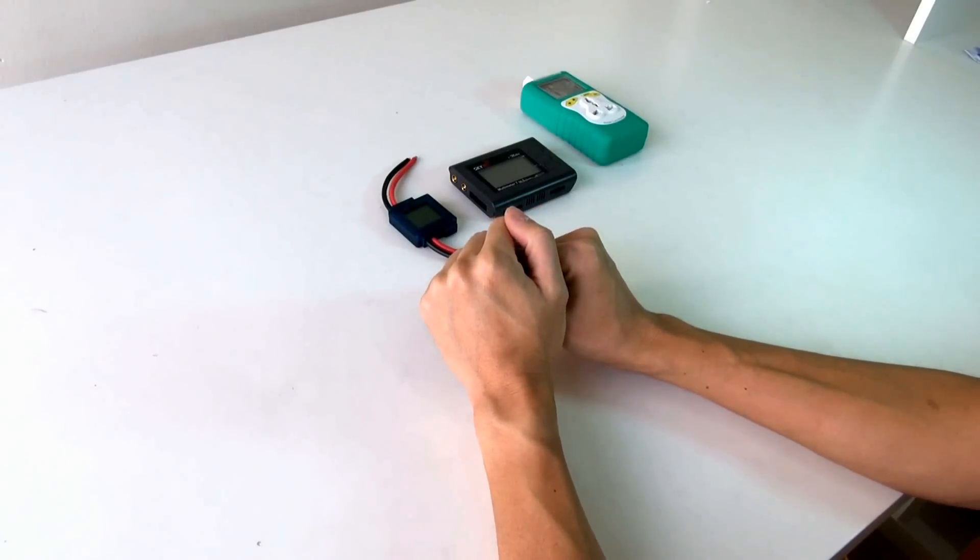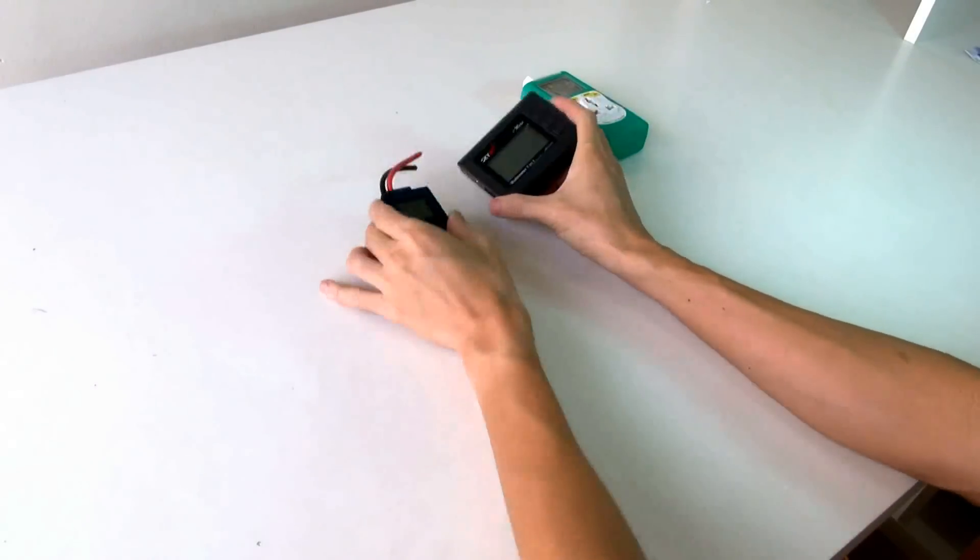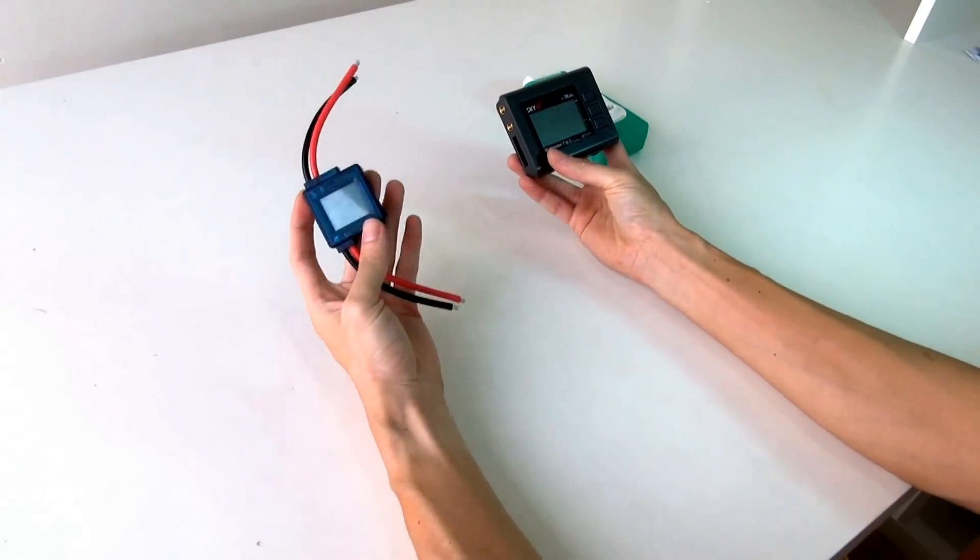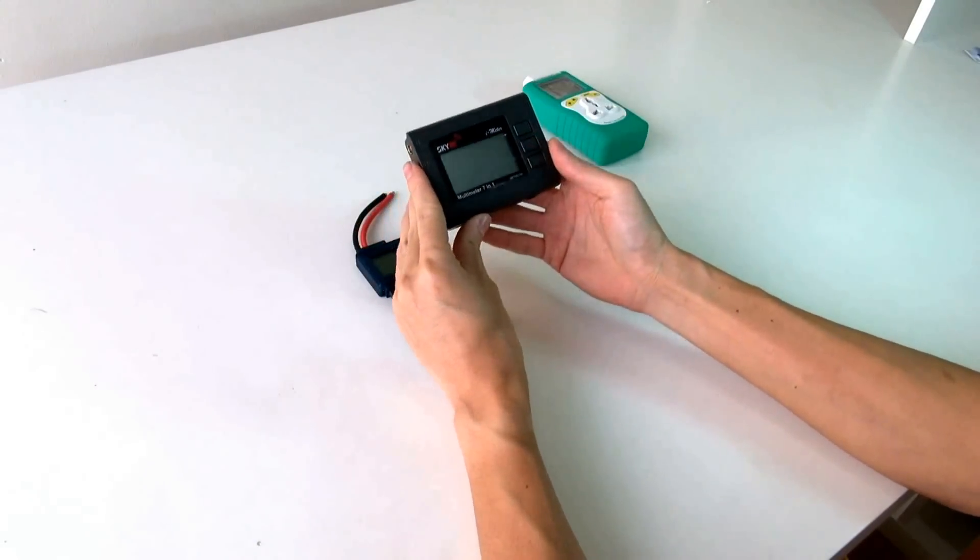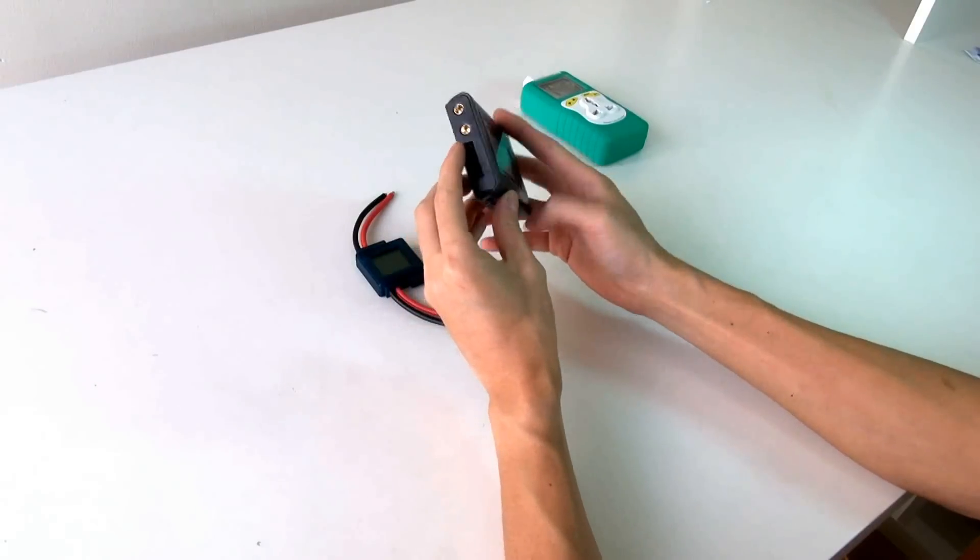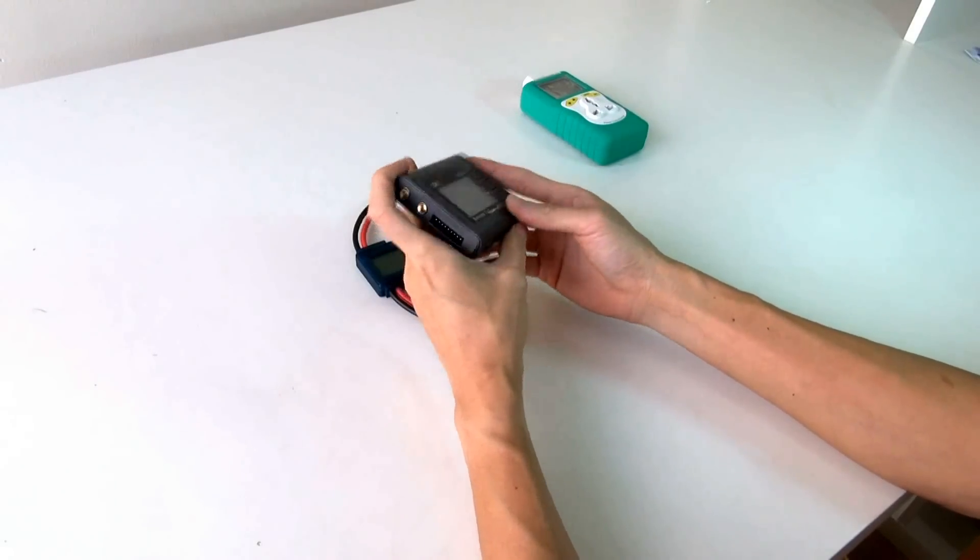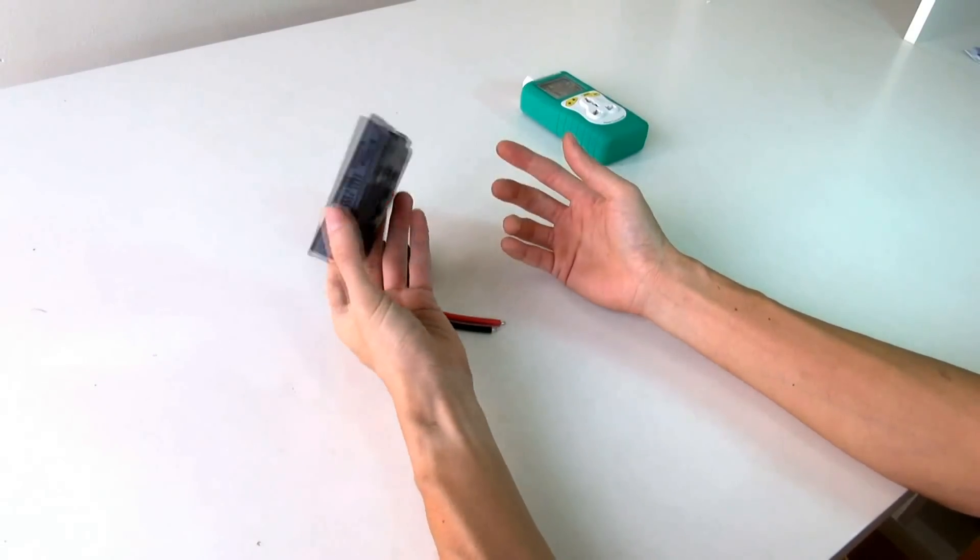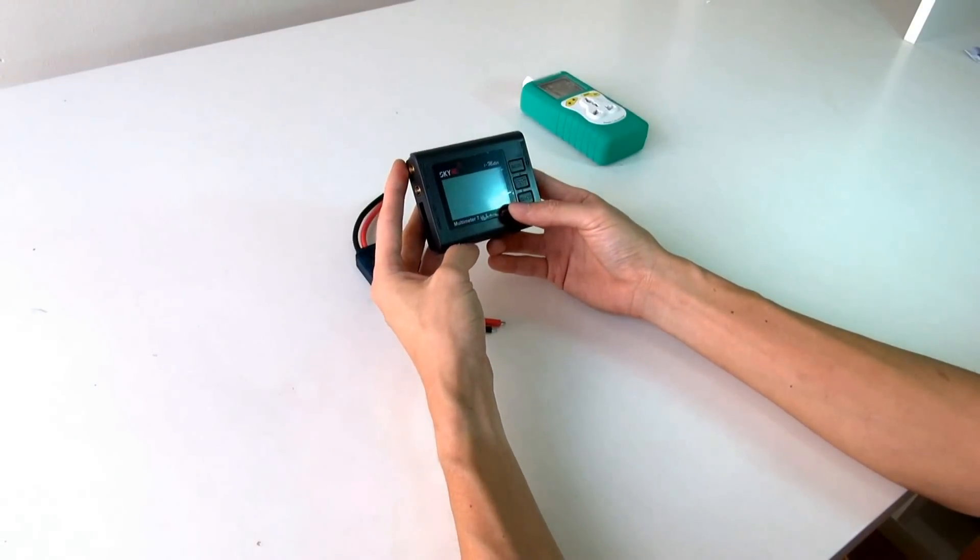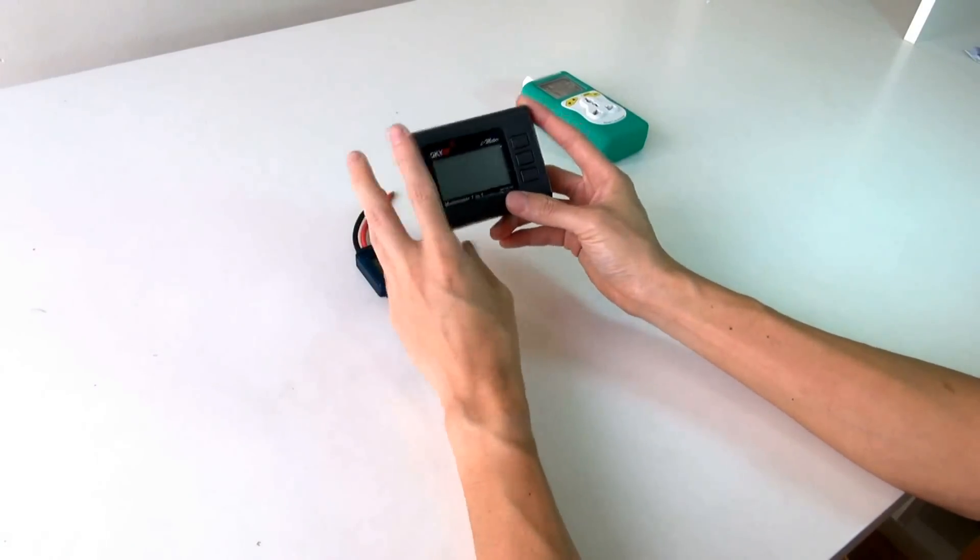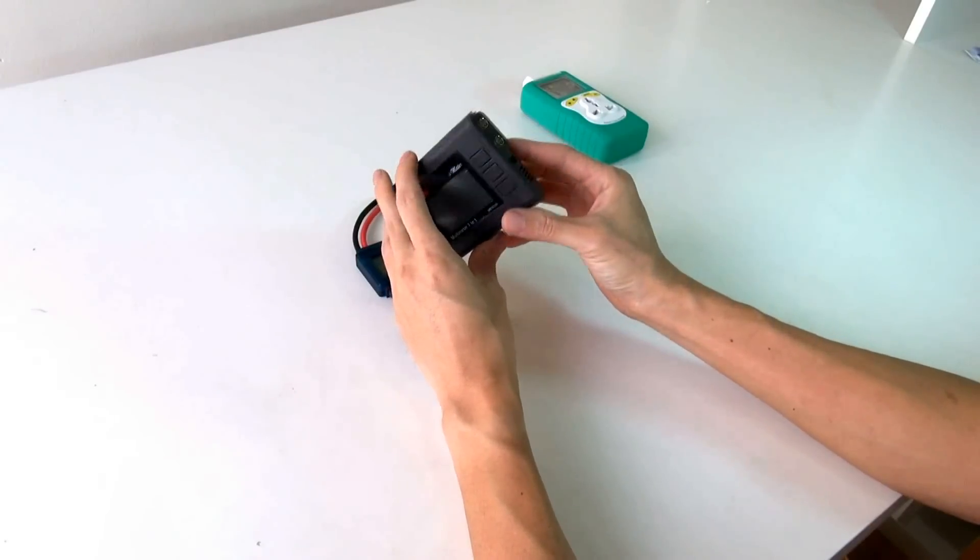What I have with me right now is two watt meters. Raphael will explain a bit on this watt meter. As you can see, this one is a 7-in-1 watt meter. Besides a watt meter, it also has another function like multimeter, battery checker.